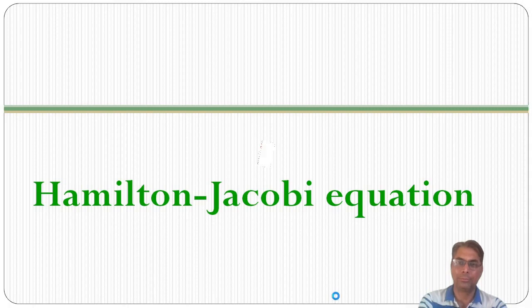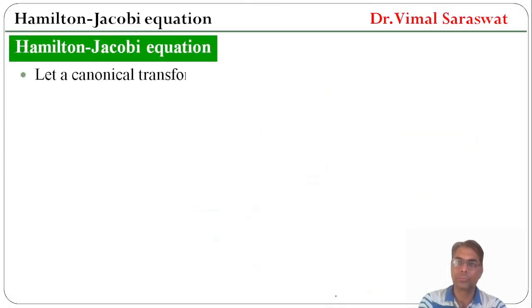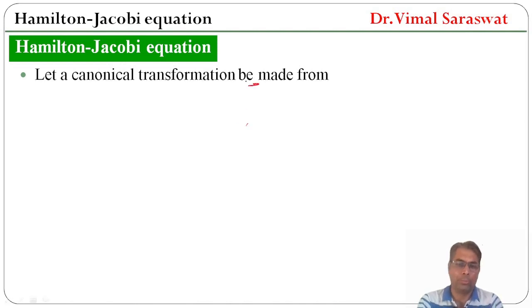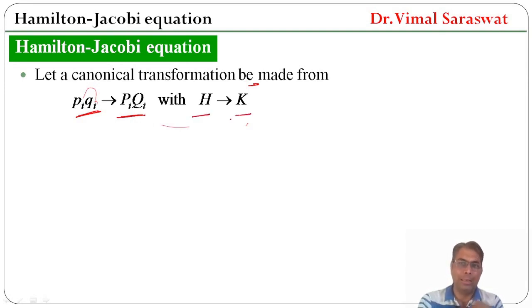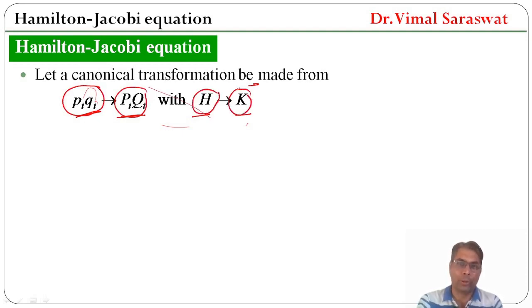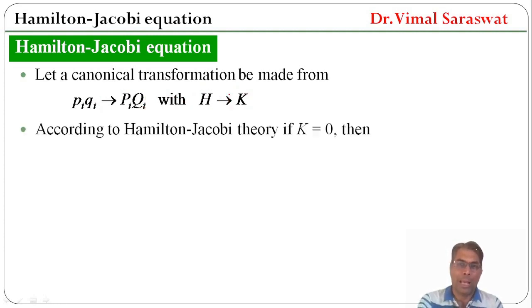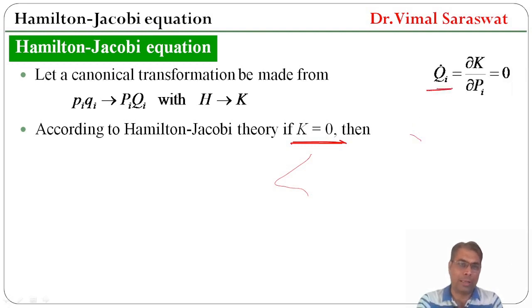Now, the Hamilton-Jacobi equation. Let a canonical transformation be made from (p_i, q_i) to (P_i, Q_i) with Hamiltonian H transforming to new Hamiltonian K. According to Hamilton-Jacobi theory, if the new Hamiltonian K equals zero, then Q_i dot = ∂K/∂P_i = 0 and P_i dot = −∂K/∂Q_i = 0.